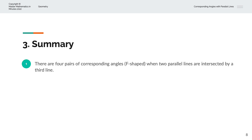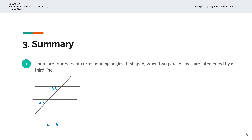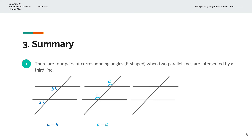To summarize, there are four pairs of corresponding angles — or as we call it, the F-shaped angles — when two parallel lines are intersected by a third line. The first pair is A equals B, the second pair is C equals D, the third pair is E equals F, and finally G equals H as the fourth pair.